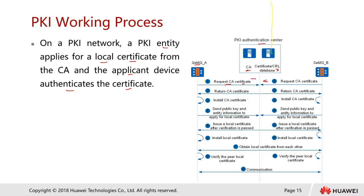Both firewalls request a certificate, and in return the CA sends its own certificate to both sides. After that, they install the CA certificate. This could be an enterprise CA or a public CA. Enterprise CA means the organization has their own root CA, so you need to perform this process to install the CA certificate.